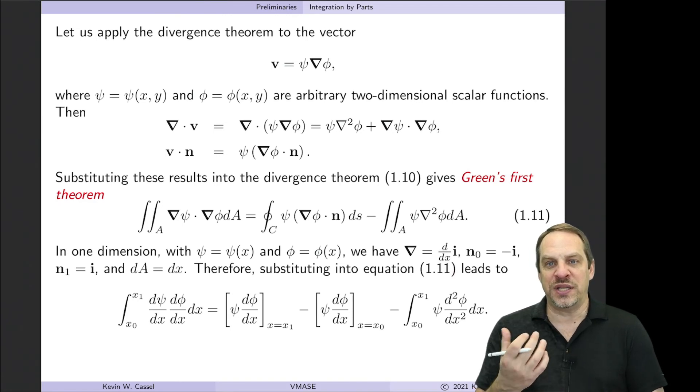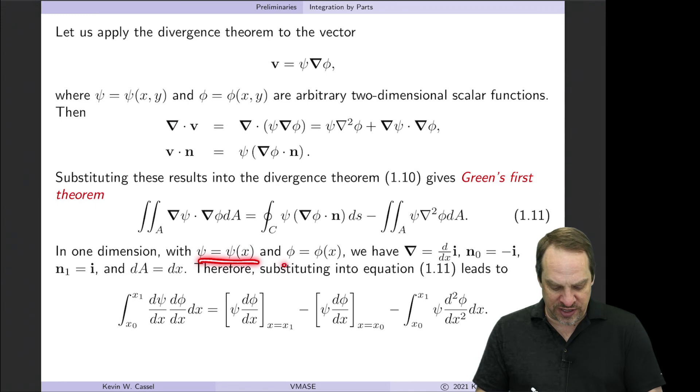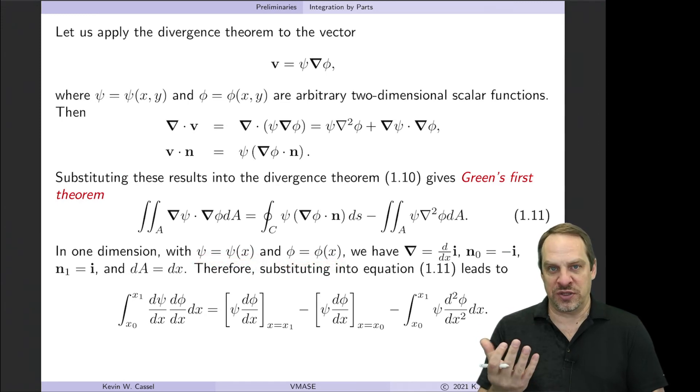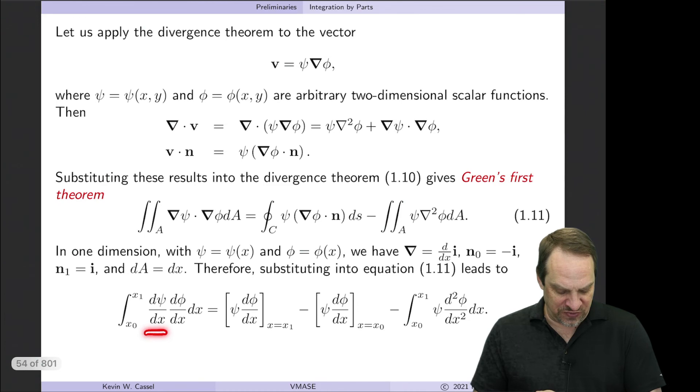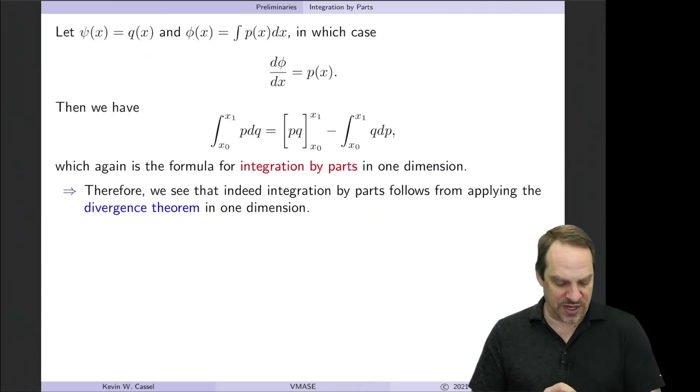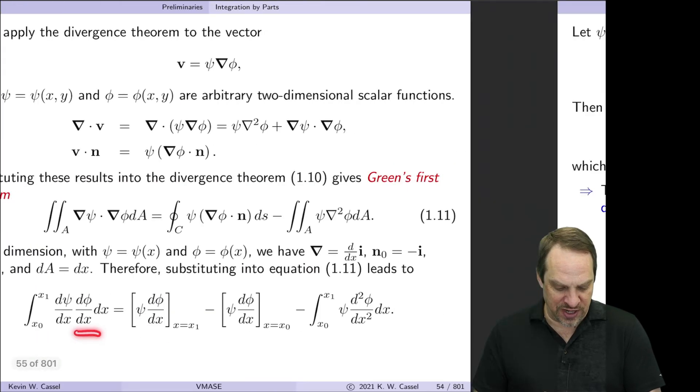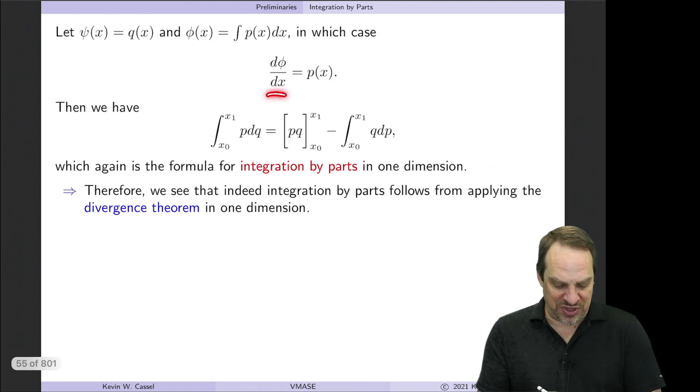So how do we relate this back to our p's and q's? Well, these two functions, ψ and φ, I can make them related to the p's and q's however I want. So let's set ψ to be q and φ to be the integral of p dx. So if φ is the integral of p dx, then dφ/dx is just p. So if you look at this first term, dψ/dx, well, that's just dq/dx. And dφ/dx, well, that's just p.